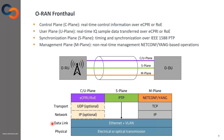Ethernet is the preferred packet-based technology for the transport network of the ORAN fronthaul, because of its ubiquitous applications and the ability to mix different types of traffic.